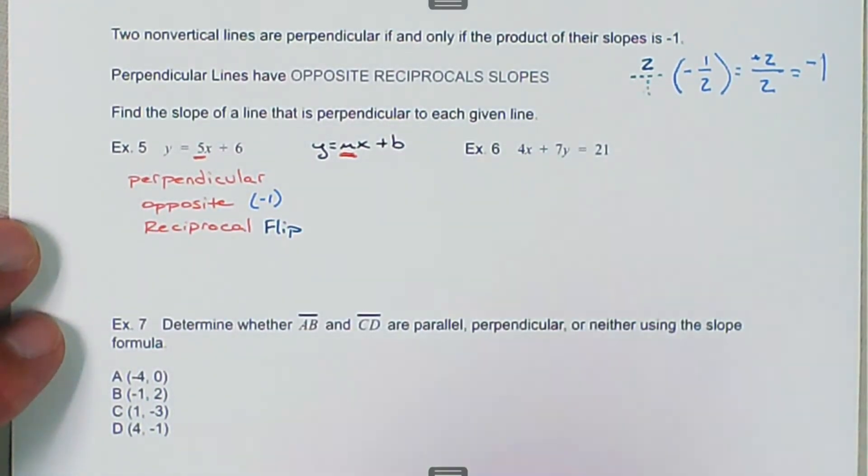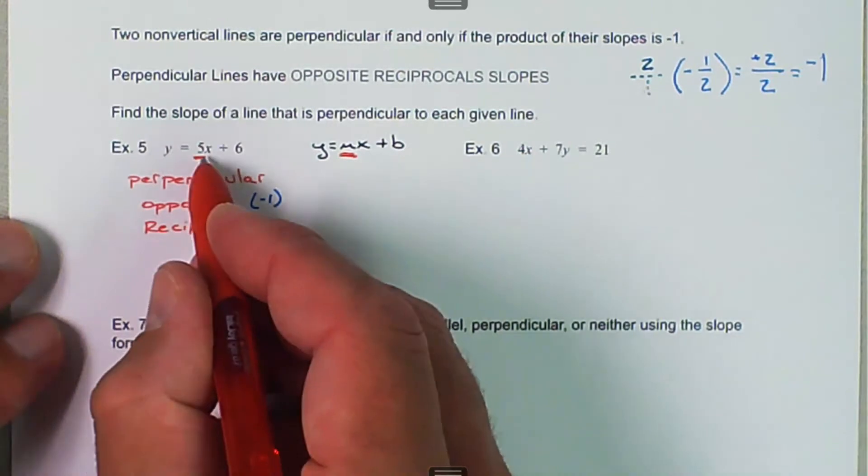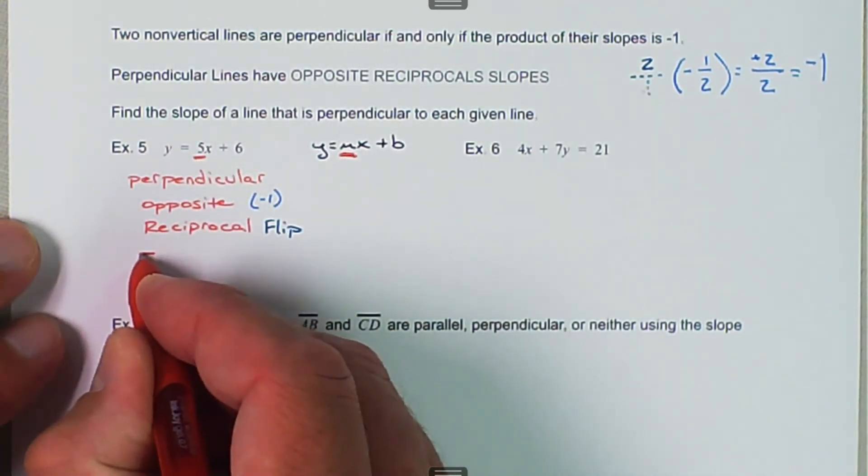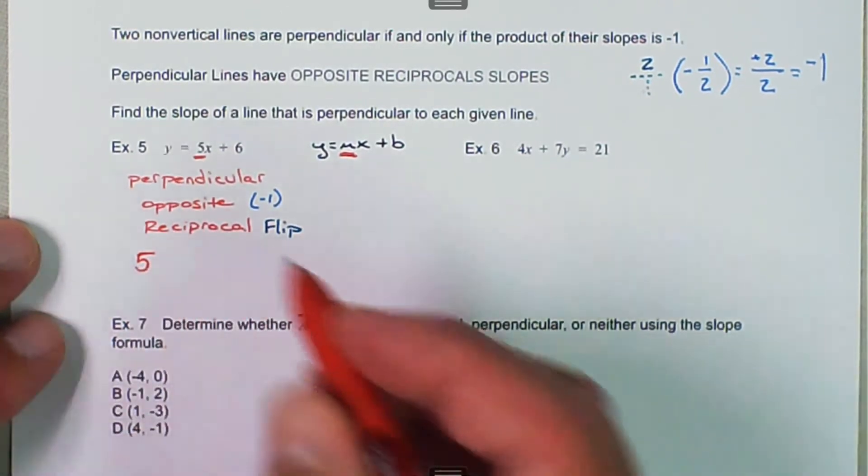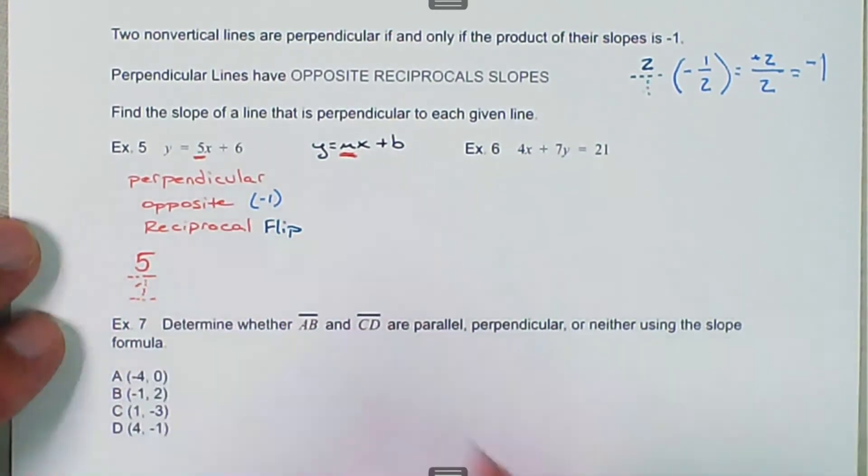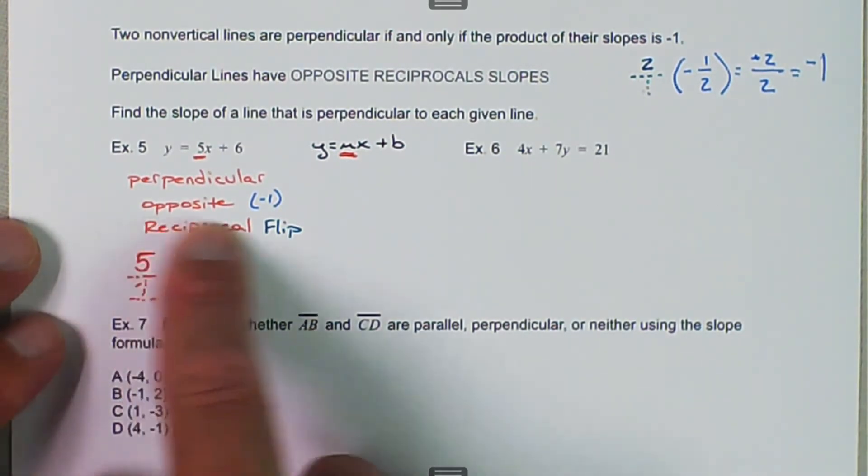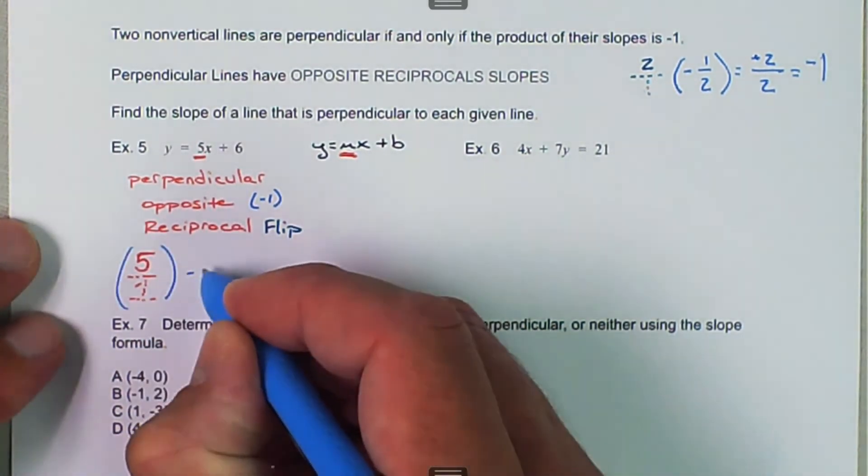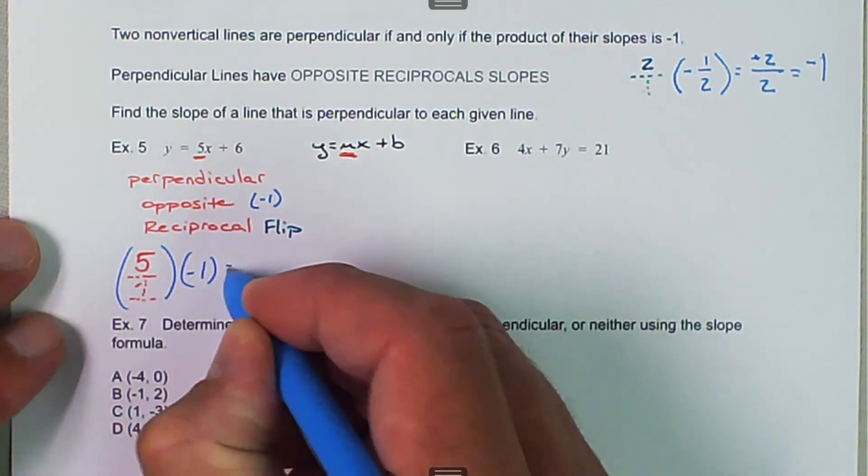So we've identified the slope, which in this case is 5, and if it's not a fraction, we can write it as 5 over an understood 1 in the denominator, for this case just to help us see it a little bit better. So opposite means we have to multiply this by negative 1. So I'm going to put that in parentheses and multiply it by negative 1.